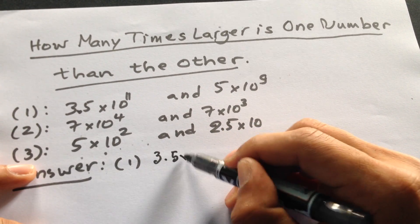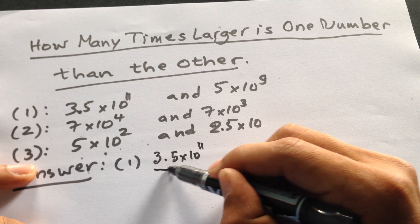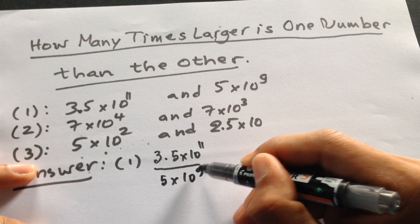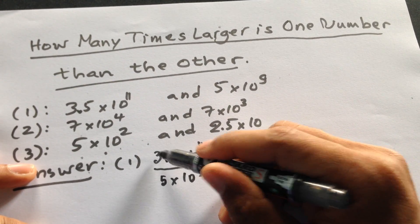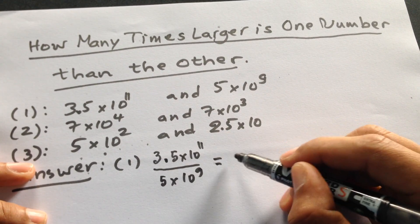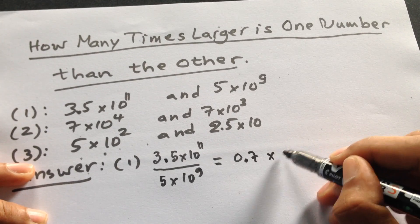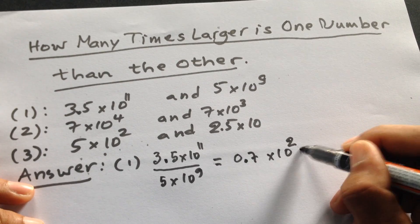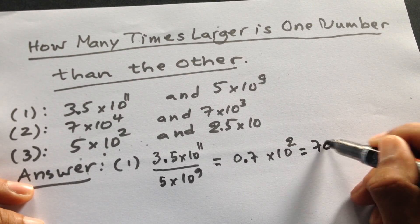3.5 times 10 to the power 11 divided by 5 times 10 to the power 9. And 3.5 divided by 5, so it is 0.7 times 10 to the power 2, and then we can write it 70.